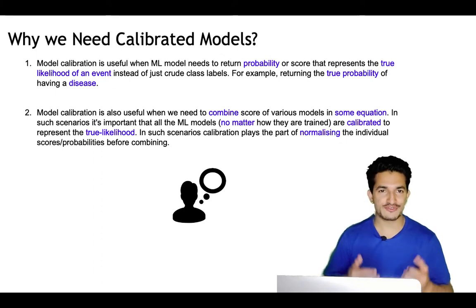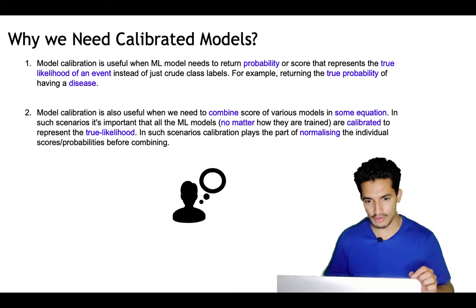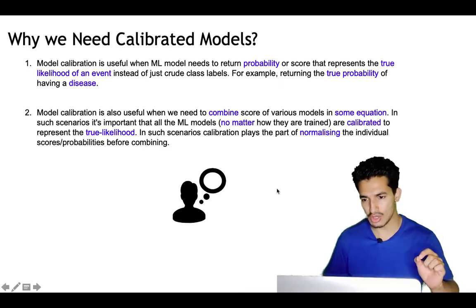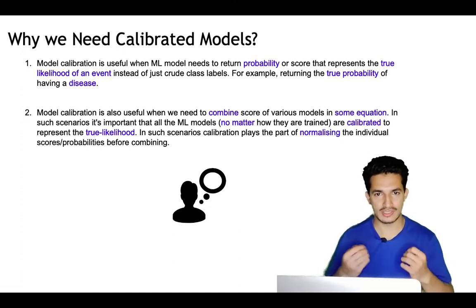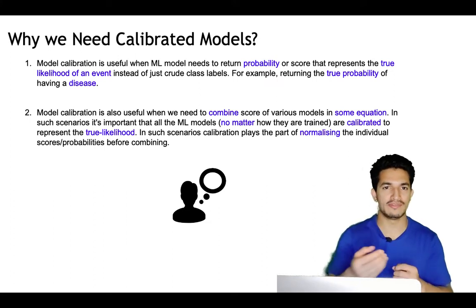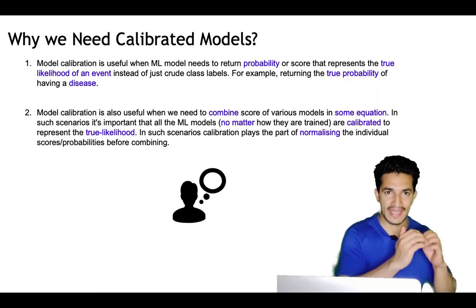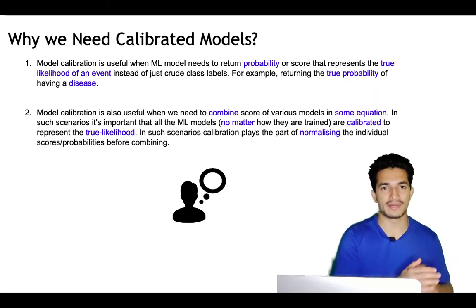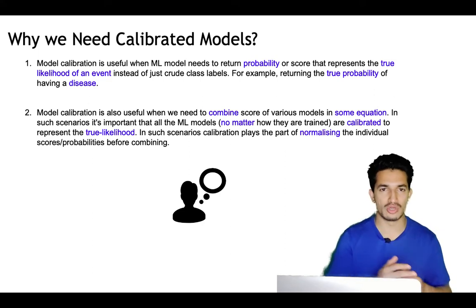Why do we need calibrated models? Model calibration is useful when ML models need to return probabilities or scores that represent the true likelihood of the event instead of just crude class labels. It's helpful when returning the true probability of an event — like a person having a disease or not — where if we say 0.6, it is the actual probability of that person having the disease.